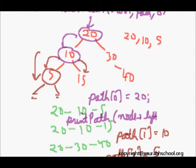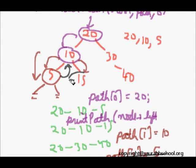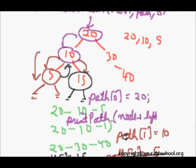After printing, we come back to node 10. The call for node->left is complete. At this point, path[2] is gone — we only have path[0] and path[1]. Now we call printPathRecursively for node->right, coming to node 15. path[2] = 15, and since node->left and node->right are both null, it prints 20, 10, and 15.